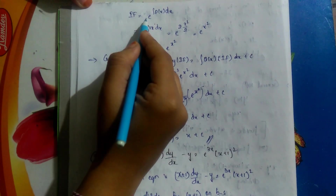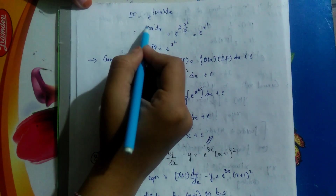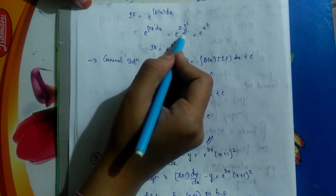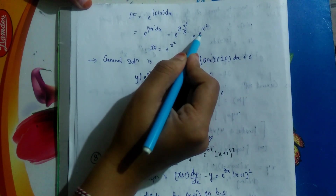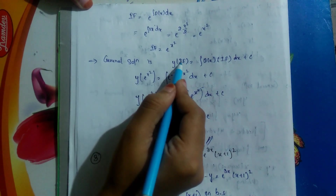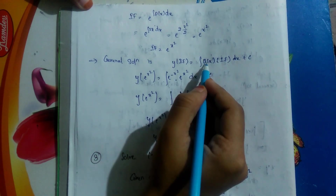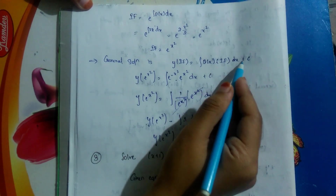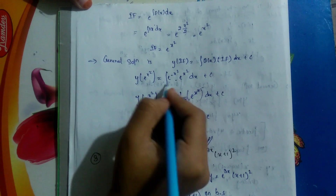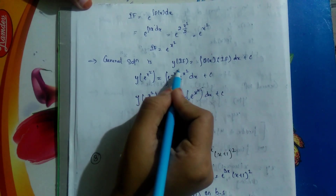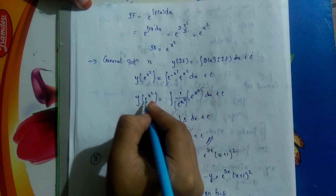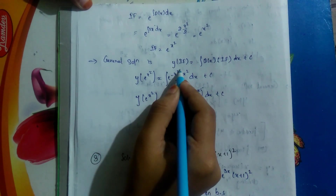The integrating factor is e to the power of ∫P(x) dx, which is e^(∫2x dx). Since 2 is a constant, the integral of x is x²/2, so 2 times x²/2 gives x². The integrating factor is e^(x²). The general solution is: y times e^(x²) equals ∫e^(−x²) · e^(x²) dx plus c.